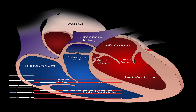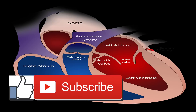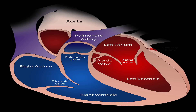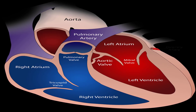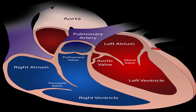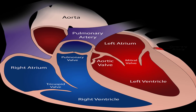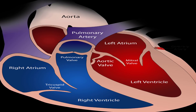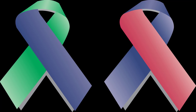Heart disease is difficult enough when it strikes adults, but it can be especially tragic in children. Many different types of heart problems can affect children. They include congenital heart defects, viral infections that affect the heart, and even heart disease acquired later in childhood due to illnesses or genetic syndromes. The good news is that with advances in medicine and technology, many children with heart disease go on to live active, full lives.